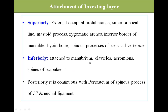Inferiorly, it is attached to the manubrium, clavicles, acromions, and spines of the scapulae. Posteriorly, it continues with the periosteum of the spinous process of the seventh cervical vertebra and the nuchal ligament. These are the attachments of the investing layer of the deep cervical fascia.